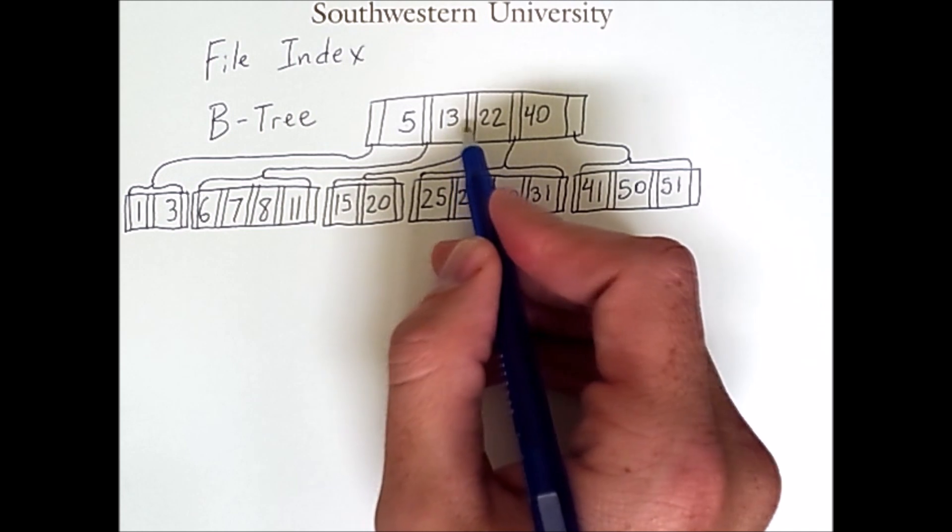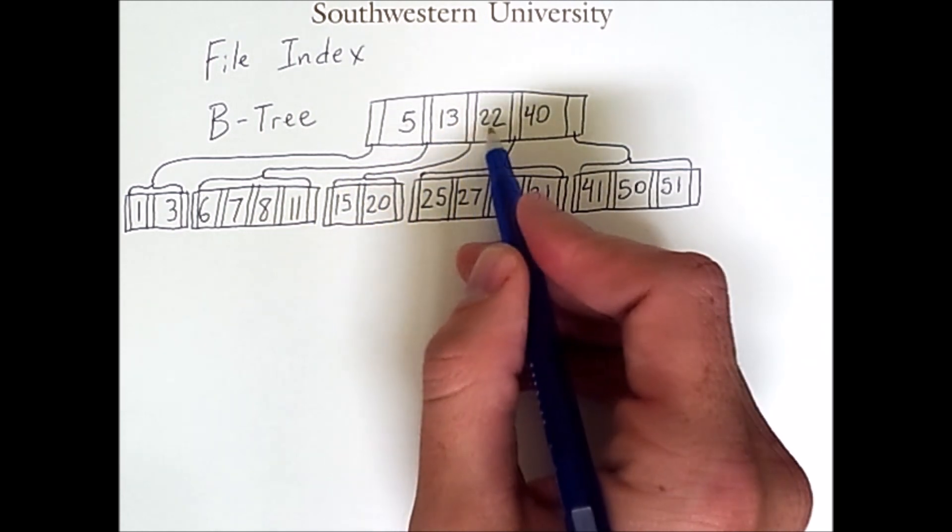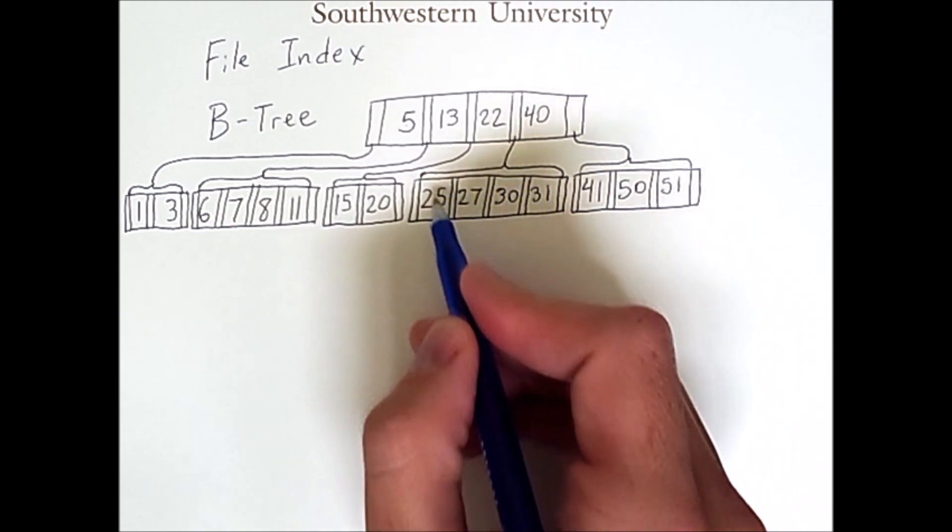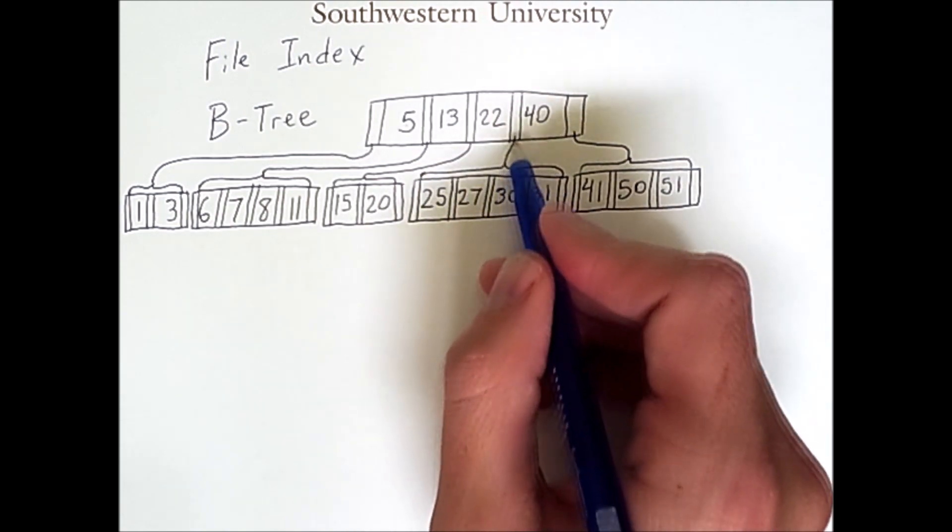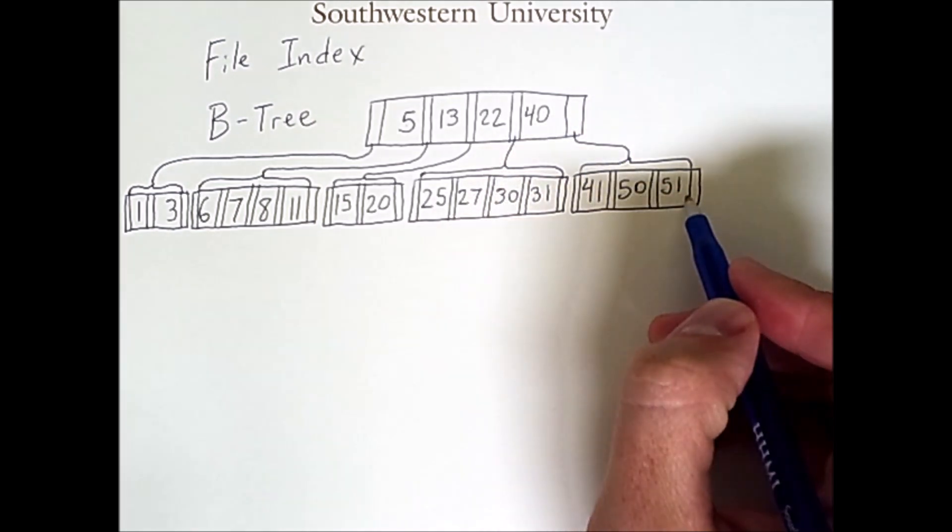Then to the center, we have 13, then back down, 15, 20, then back up, then 22, down, 25, 27, 30, 31, up, 40, and then down, 41, 50, 51.